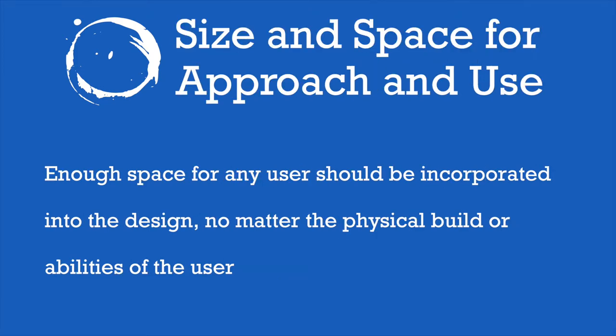The seventh and final NDA principle is size and space for approach and use. Enough space for any user should be incorporated into the design, no matter the physical build or abilities of the user. People come in a huge range of shapes and sizes, and we must take that into account when designing spaces. We must take into account that people who need to use a walker, a wheelchair, a motorized mobility device, or bring a stroller, will be using this space as well as people just using their own two feet. If there are buttons or information input requirements, we must make sure that these are accessible to anybody and not too high for certain people to reach or too difficult for some people to use.